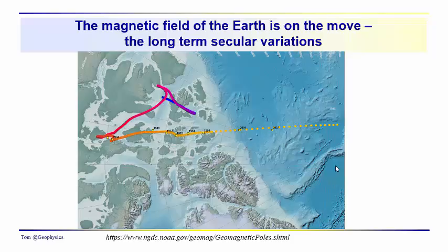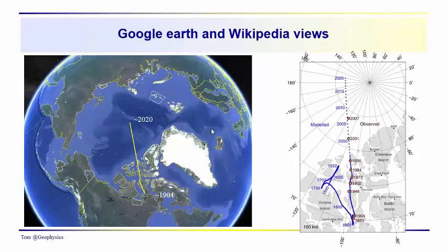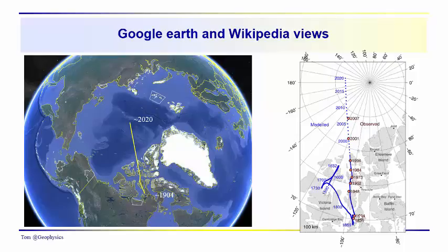This would be the geographic pole here. It's been moving at almost an accelerated pace compared to what it did in the preceding 400 years, though it looks like it may have been dropping off a bit recently. This is a Google Earth image of that path from 1904 to 2020, and the predictions are that in about the year 2050, the north geomagnetic pole will be located somewhere over here in Siberia — heading along at a steady clip just to the west of the Earth's geographic north pole.